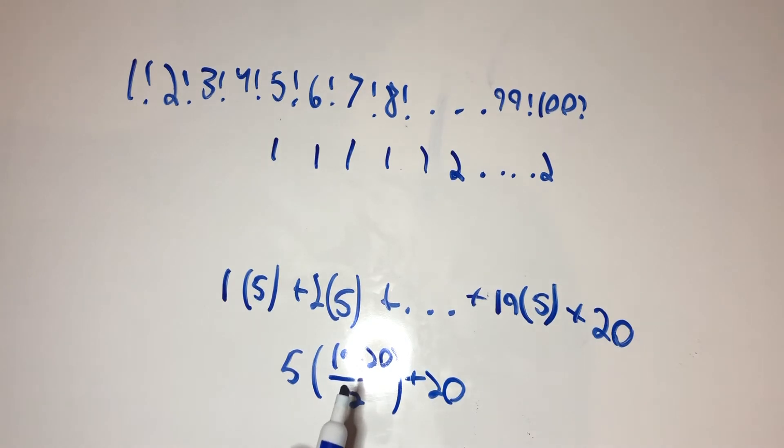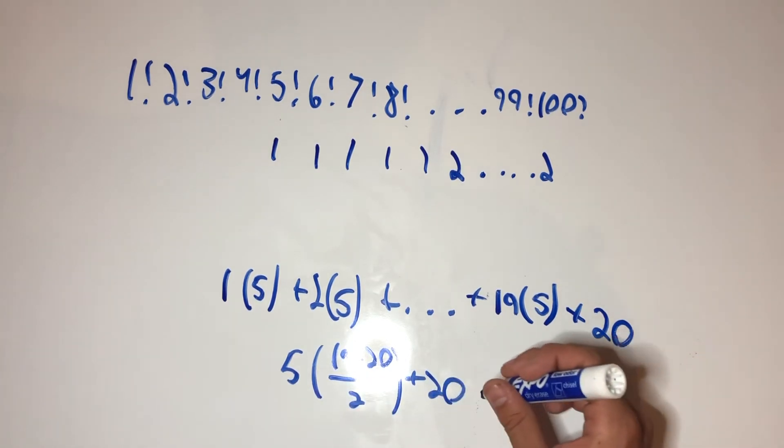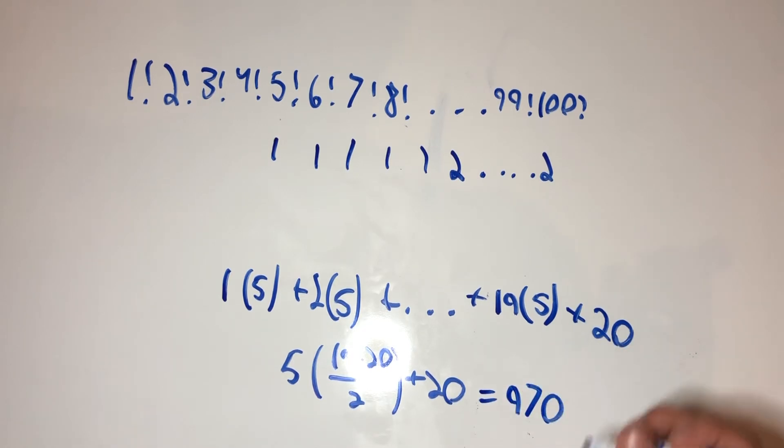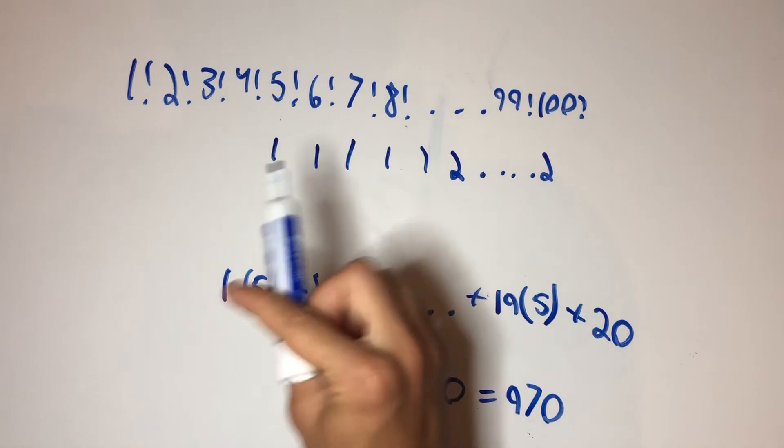Which equals 10 times 19, 190 times 5. So, 950, so 970. Okay? So, there are 970 factors of 5.